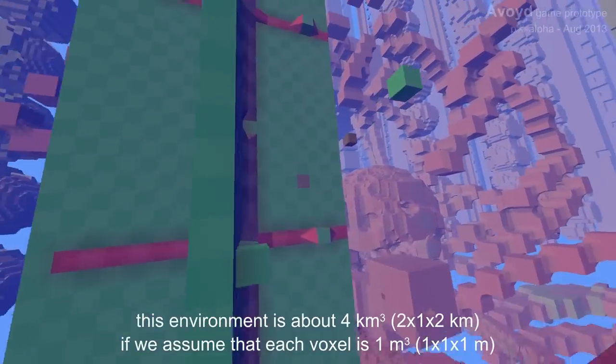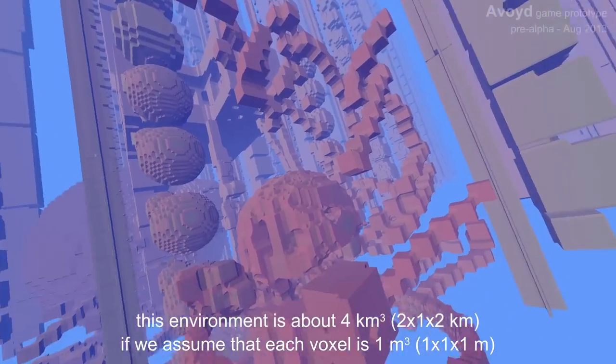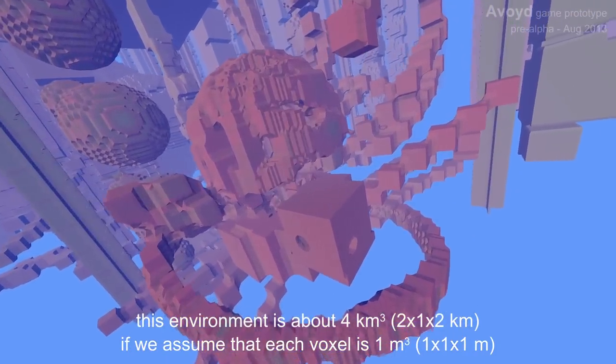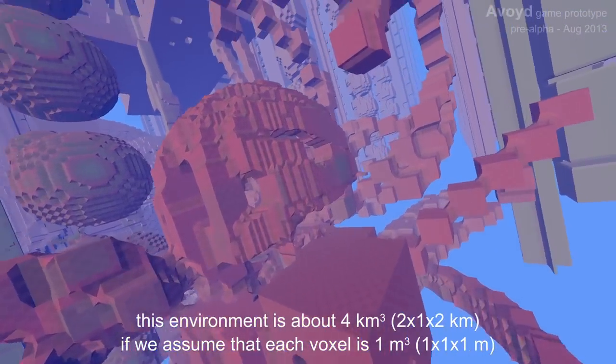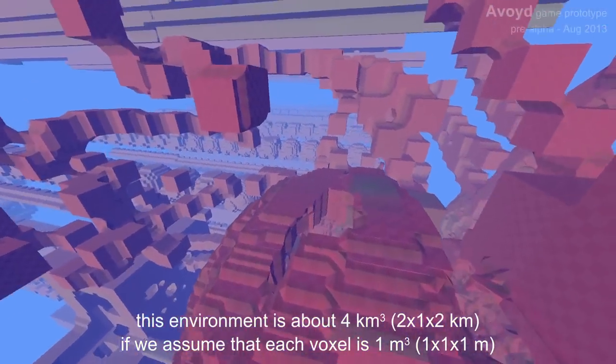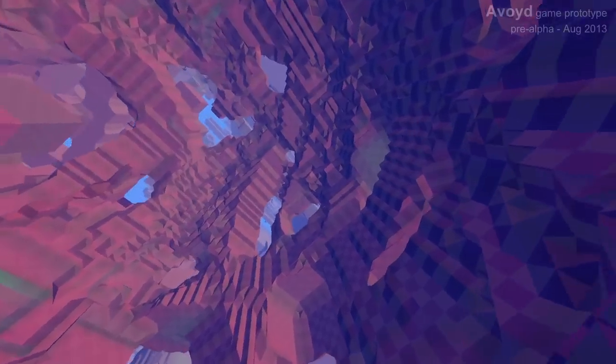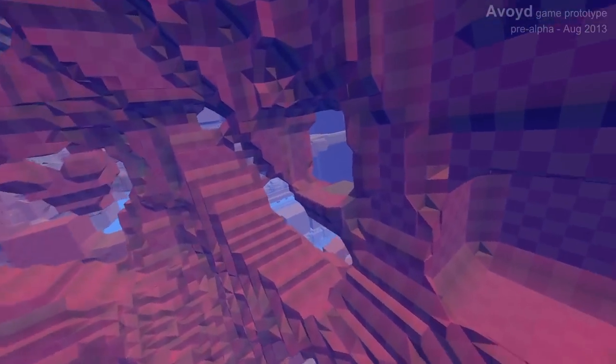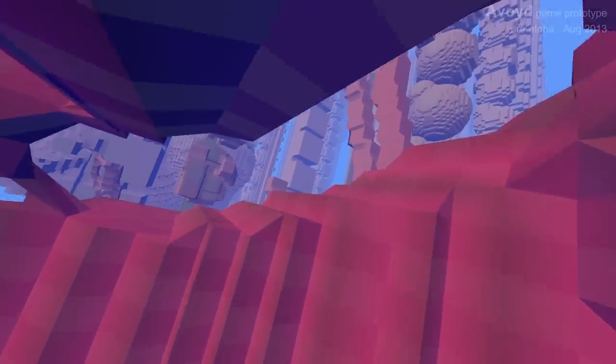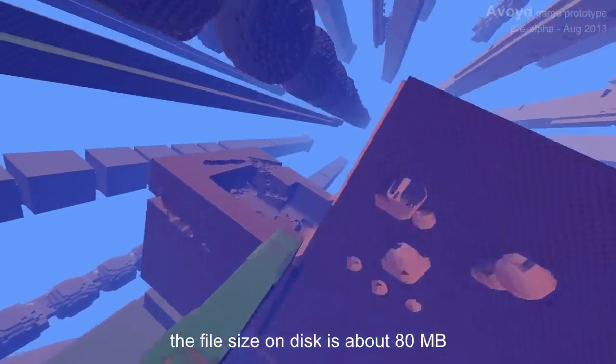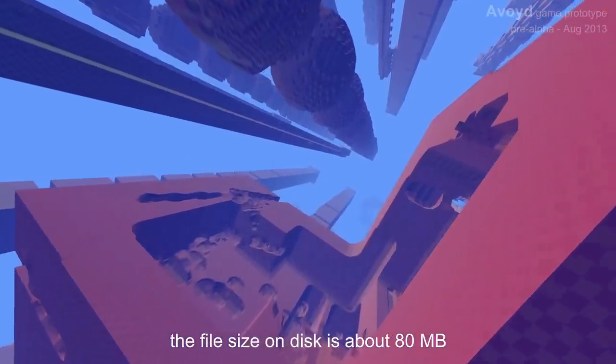So this environment was about 2 km by 1 km by 2 km in size if we have each of the voxel cubes as being 1 meter by 1 meter by 1 meter. We're not constrained to that size of environment. But this level takes up around 80 megabytes on disk.